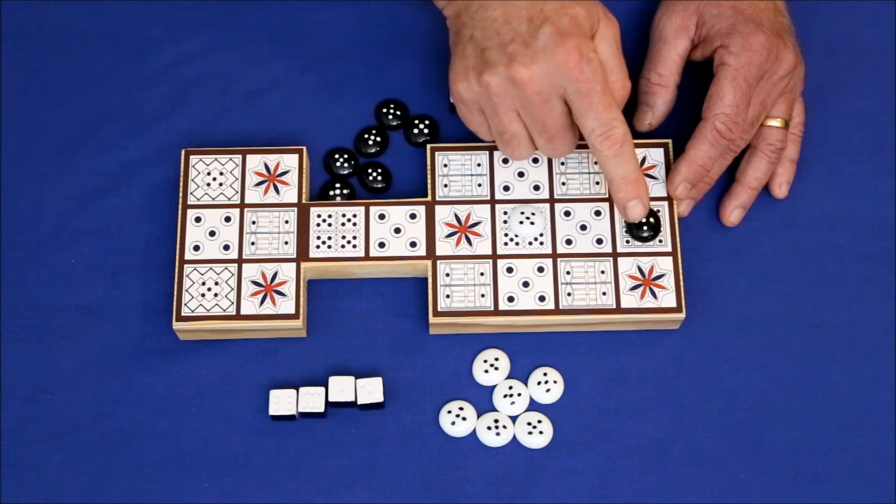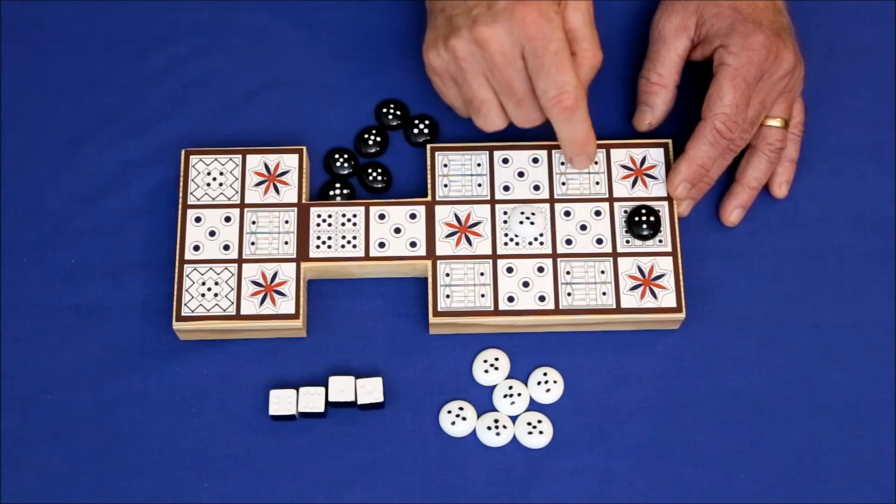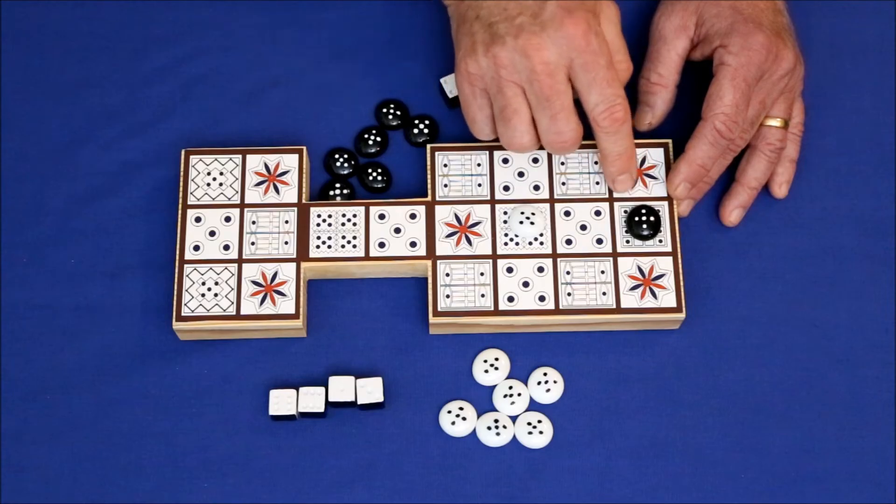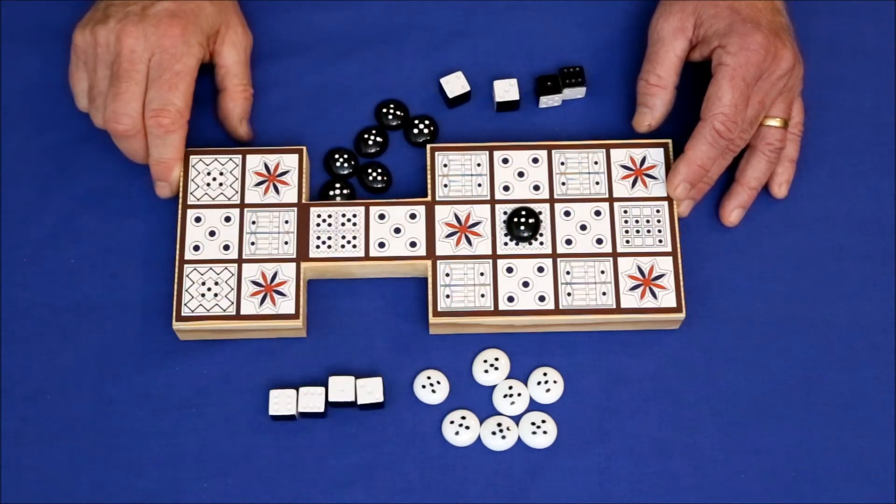Equally, you want to maneuver your pieces whenever possible to be two behind your opponent because that gives you the greatest chance of throwing a two and knocking him home.